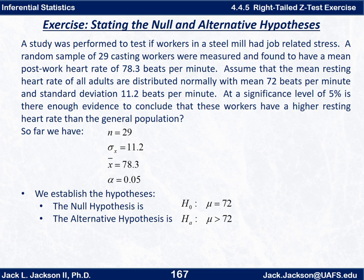Now let's look at what we have. Parsing out the numbers from the problem: n, the sample size, is 29. Sigma sub x, the standard deviation of the population, is assumed to be 11.2. X-bar, the sample mean, is 78.3. Alpha is 0.05. The null hypothesis H₀ is that the population mean μ equals 72 — that these workers are just like anyone else in the population. The alternative hypothesis is that μ is greater than 72. Some people write H₀ with less than or equal to, but for the test we assume μ is exactly 72 when computing the distribution of sample means.